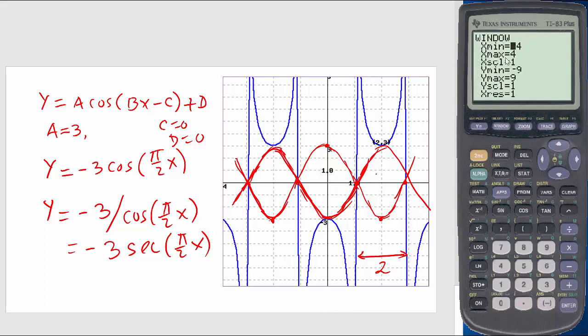So there I'm fixing going to negative 4 to 4 and negative 9 to 9. And then graph this one. You see the perfect matching with the blue graph. So that's why the function for this blue graph will be y equals negative 3 secant pi by 2 x. We are done.